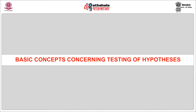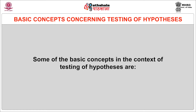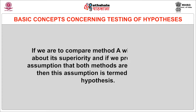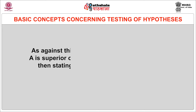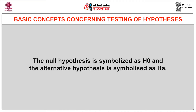Now, some of the basic concepts that concern the testing of hypothesis. The first and most important are the null hypothesis and the alternative hypothesis. If we are to compare method A with method B about its superiority and if we proceed on the assumption that both the methods are equally good, then this assumption is termed as the null hypothesis. As against this, we may think that method A is superior or method B is inferior — we are then stating what is termed as alternative hypothesis. The null hypothesis is symbolized as H₀ and the alternate hypothesis as Hₐ.